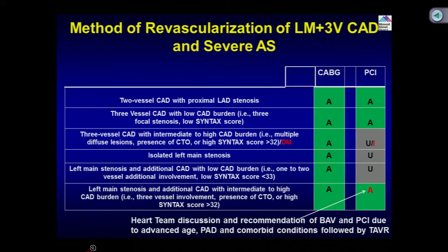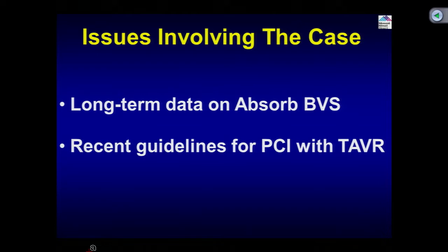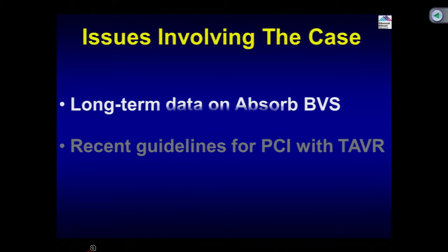The heart team discussion recommended BAV and PCI due to advanced age, PAD, and co-morbid conditions, followed by TAVI. This is what should be done in this day and age because we know it is the least traumatic and may even be a better approach compared to sending this patient for surgical valve replacement along with CABG. These kinds of cases are now very common.